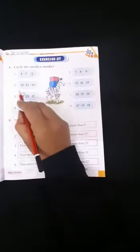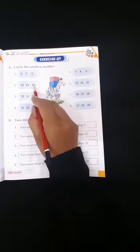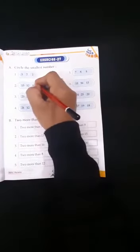Come to the next. 13, 12, 10. Yes, 10 is the smallest number. Therefore, we will put circle on 10.